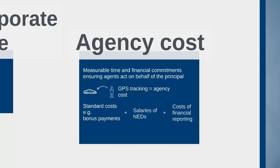Auditing costs should also be included in agency costs. The problem with all of these is that they cost the organization money, which means the shareholders are reducing the amount returned to them. What's vital is that a balance is sought — there must be acceptable expenses to make sure directors are running the business effectively, but these have to be balanced against ensuring a reasonable return on investment to the shareholders. So remember: standard costs include bonus payments, incentive schemes, and share-based payments; plus NEDs' salaries; financial reporting and auditing costs; and the balance that needs to be sought.